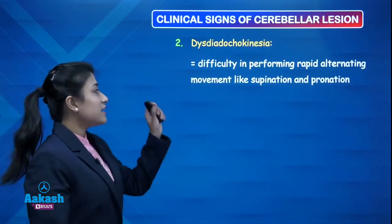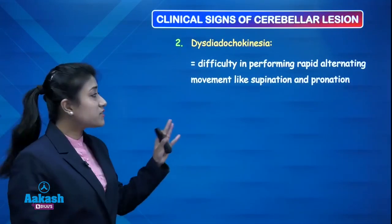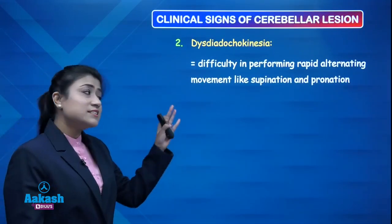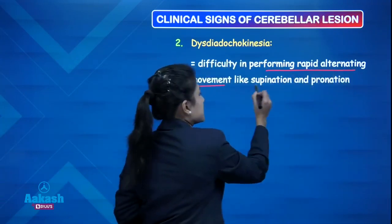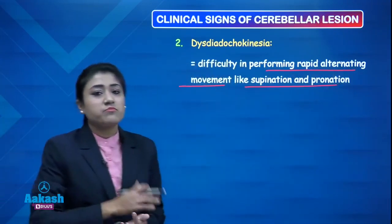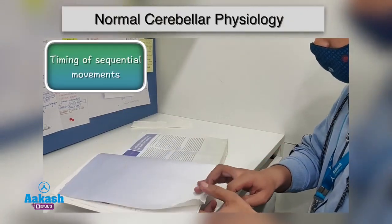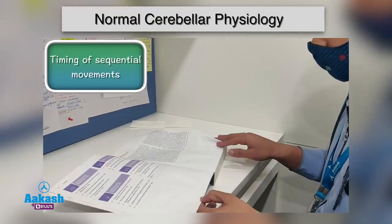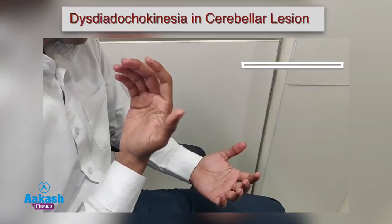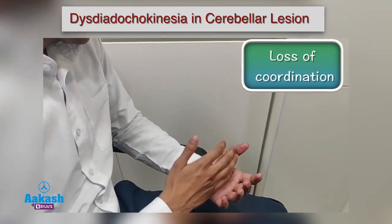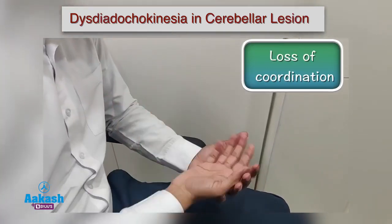The next clinical sign of cerebellar lesion is dysdiadochokinesia, where the patient has difficulty performing rapid alternating movements like supination and pronation. The cerebellum is involved in timing of sequential movements, like turning pages in a book. This coordination is lost in cerebellar lesion, leading to dysdiadochokinesia.